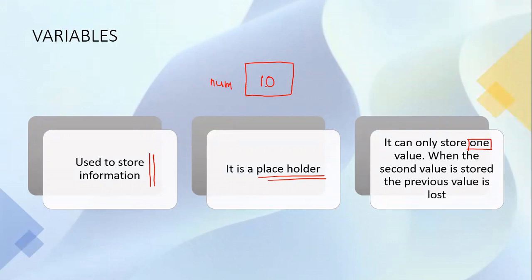If we then decide to store a second value in the same placeholder, then the previous value is lost and the new value is stored in this placeholder. Let's assume the new value is 20. So if I decide to print the value of num, then the value printed is 20. The 10 is now lost from the placeholder.